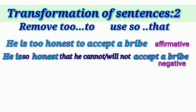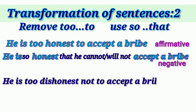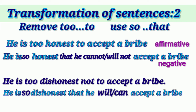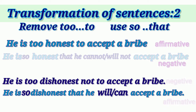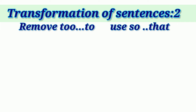You will notice that when we remove TOO², the sentence transforms from affirmative to negative. Let us now take a sentence that is already negative and change it to affirmative. The new sentence is: 'He is too dishonest not to accept a bribe.' That means: 'He is so dishonest that he will or can accept the bribe.' The transformation here changes the sentence from negative to affirmative.